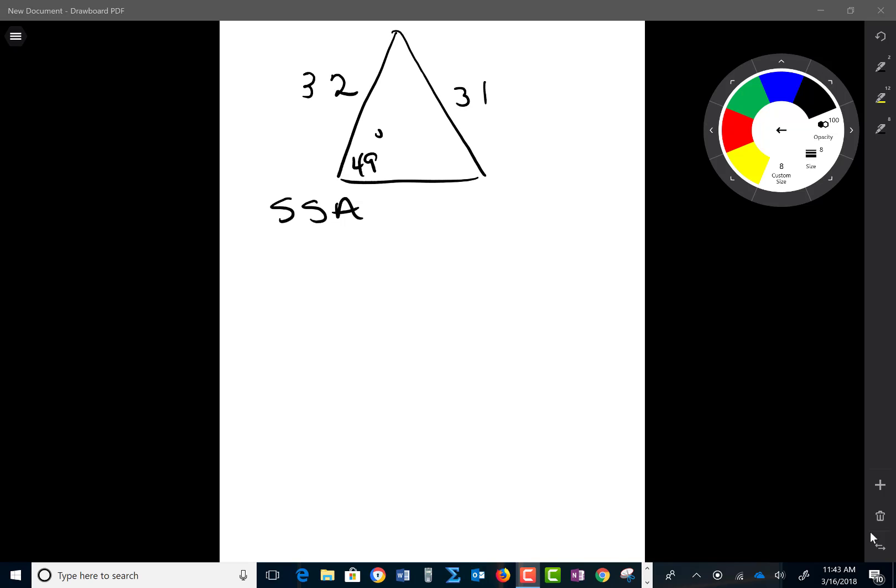This is one of the many setups for question 7 on the homework. As you can see in this triangle, we're given two sides and an angle. The angle is not between the two sides.